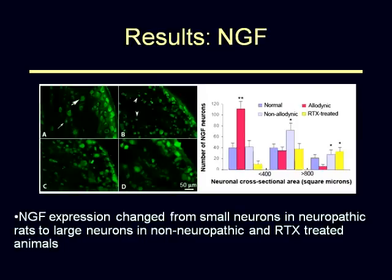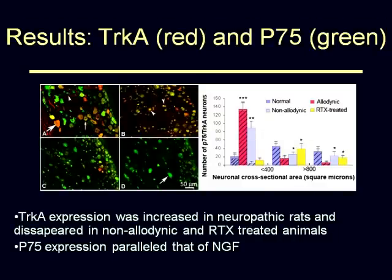More interestingly, we noticed that when we examined the dorsal root ganglia — here is the normal DRG, B is the allodynic DRG, C is rats that received nerve injury but did not become allodynic, and D is rats that became allodynic and were then treated with RTX and allodynia was abolished. When we stain these DRGs for NGF, what is really significant is that in the allodynic animals — this is a neuronal counting on the right — the NGF is concentrated mostly in the small neurons.